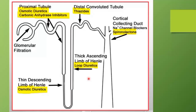What are the different types of diuretics? First, we have loop diuretics such as furosemide. Where do they act? Loop diuretics act on the thick ascending limb of the loop of Henle. Then we have thiazide diuretics, which act on the distal convoluted tubule. Then we have spironolactone, which is a potassium-sparing diuretic that acts on the collecting duct.